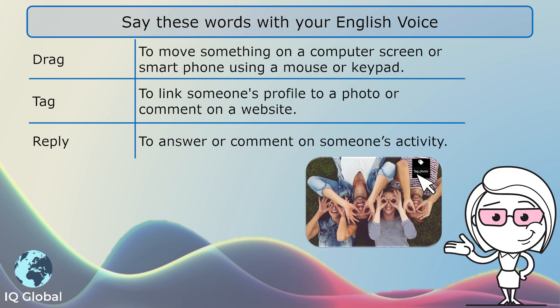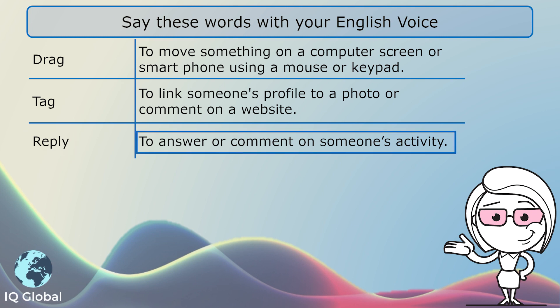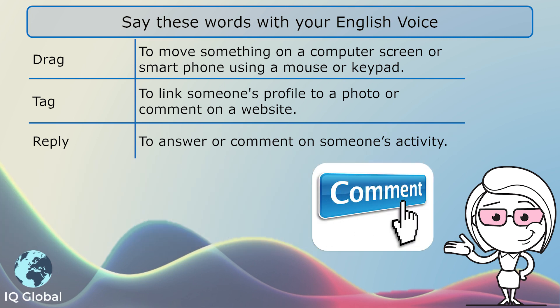Next: tag. Tag means to link someone's profile to a photo or comment on a website. I can upload a photo onto Facebook, and if it is a photo with my friends, I can tag them in that photo. That photo will now be linked to their profile.